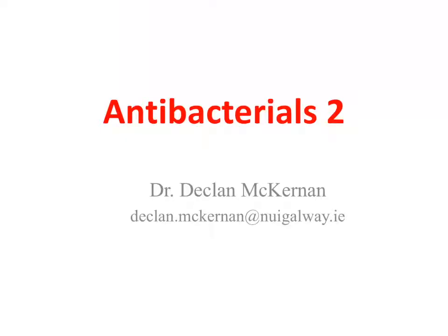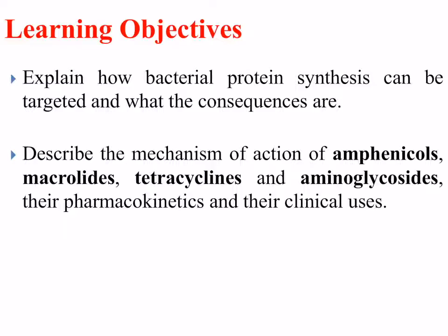Our second lecture on antibacterial drugs is going to specifically look at drugs which target protein synthesis. We're going to explain how bacterial protein synthesis can be targeted and what the consequences are. In particular, we're going to describe the mechanisms of action of four different classes of antibacterial drug: the amphenicols, the macrolides, the tetracyclines, and the aminoglycosides. We're also going to discuss their pharmacokinetics, side effects, and clinical uses.